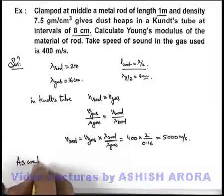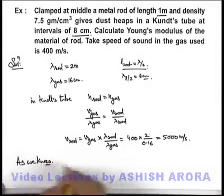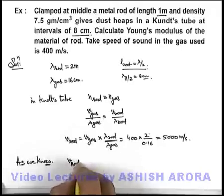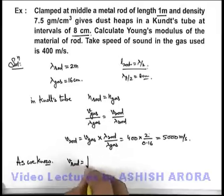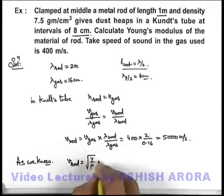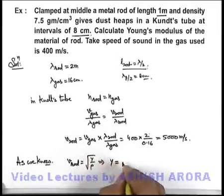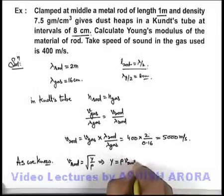And as we know, velocity in a metal rod can be given as root of Young's modulus by density. This implies Young's modulus can be written as rho times v_rod squared.